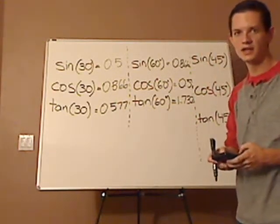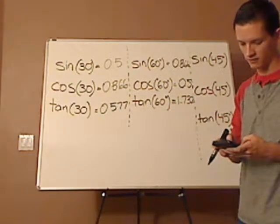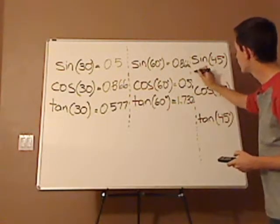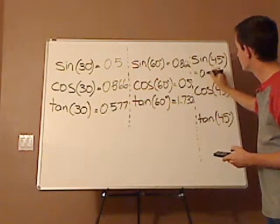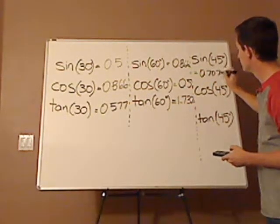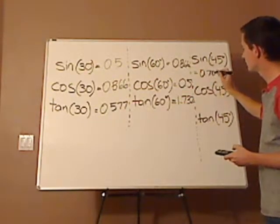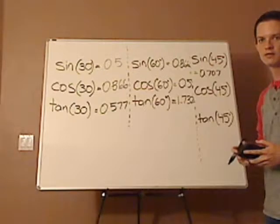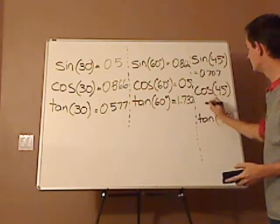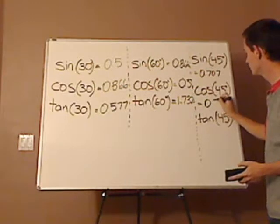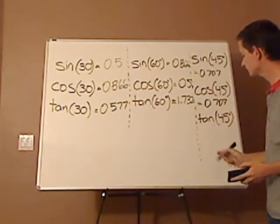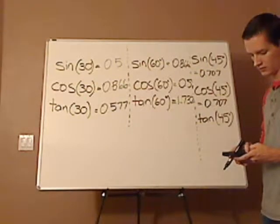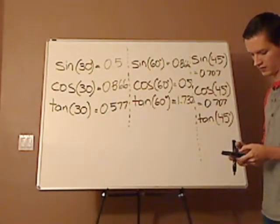And then sine of 45 degrees, I get approximately 0.707. And then cosine of 45 degrees, it's going to be the same, 0.707. And then tan of 45 degrees is 1.